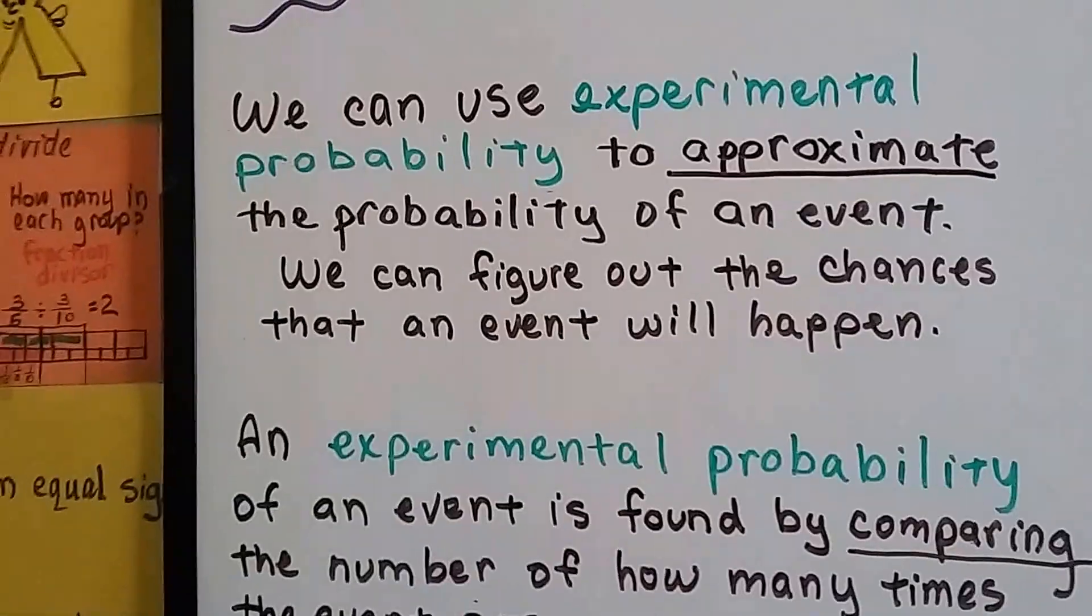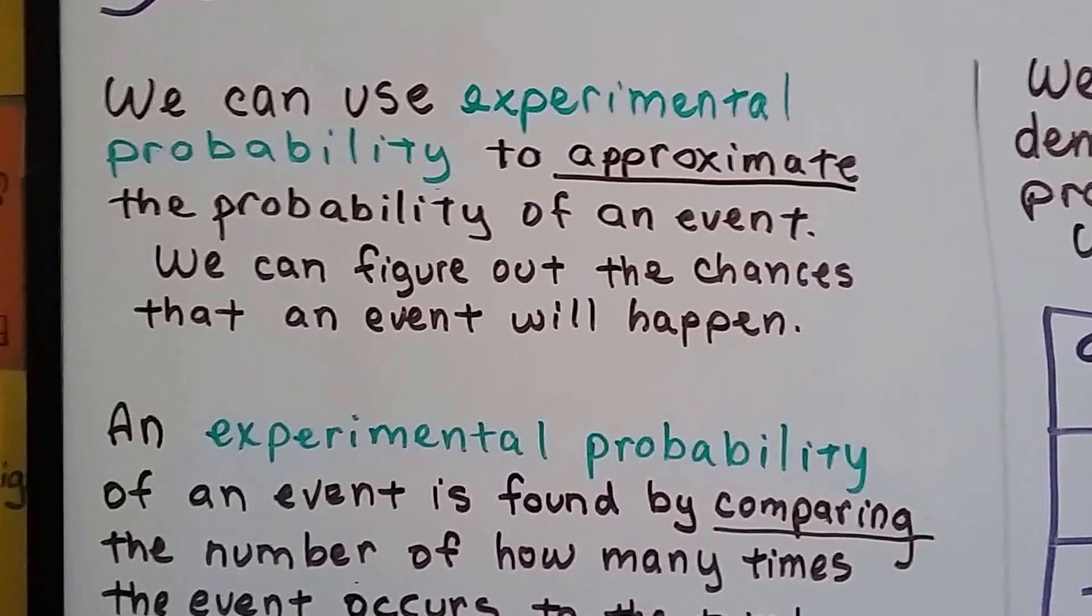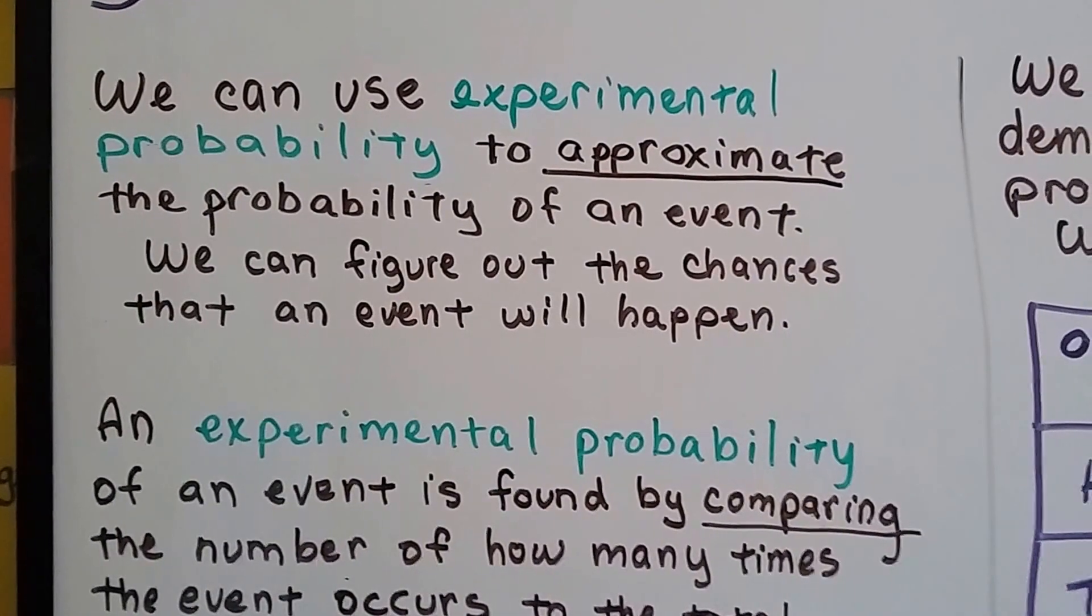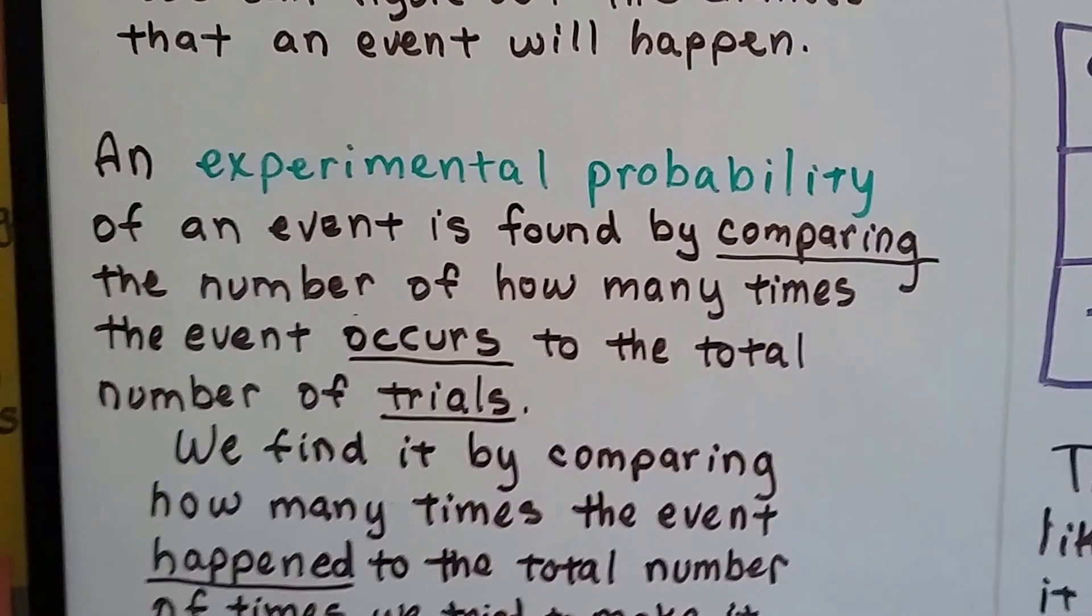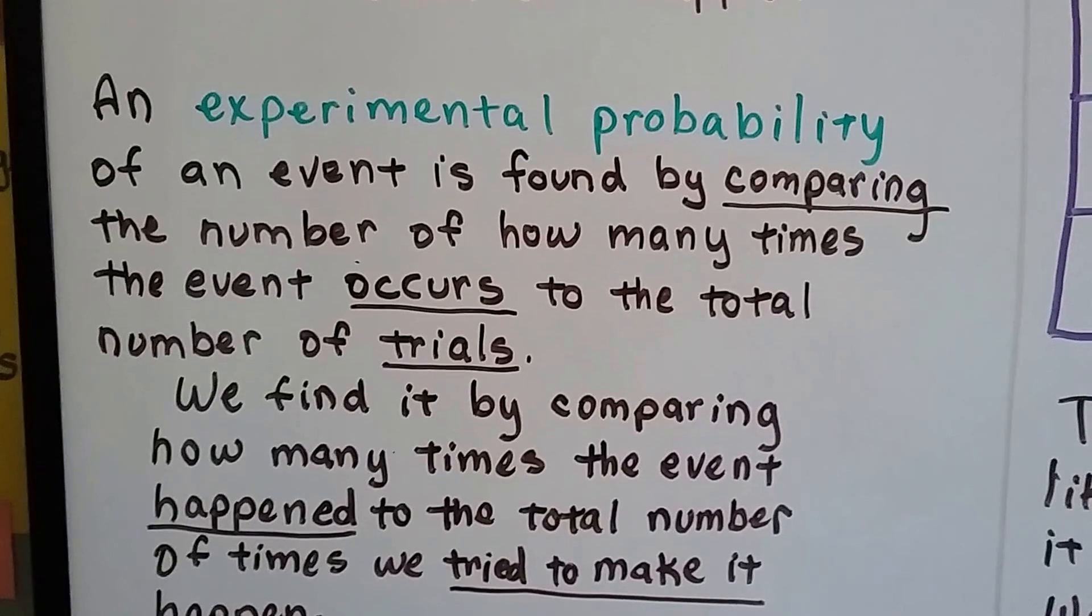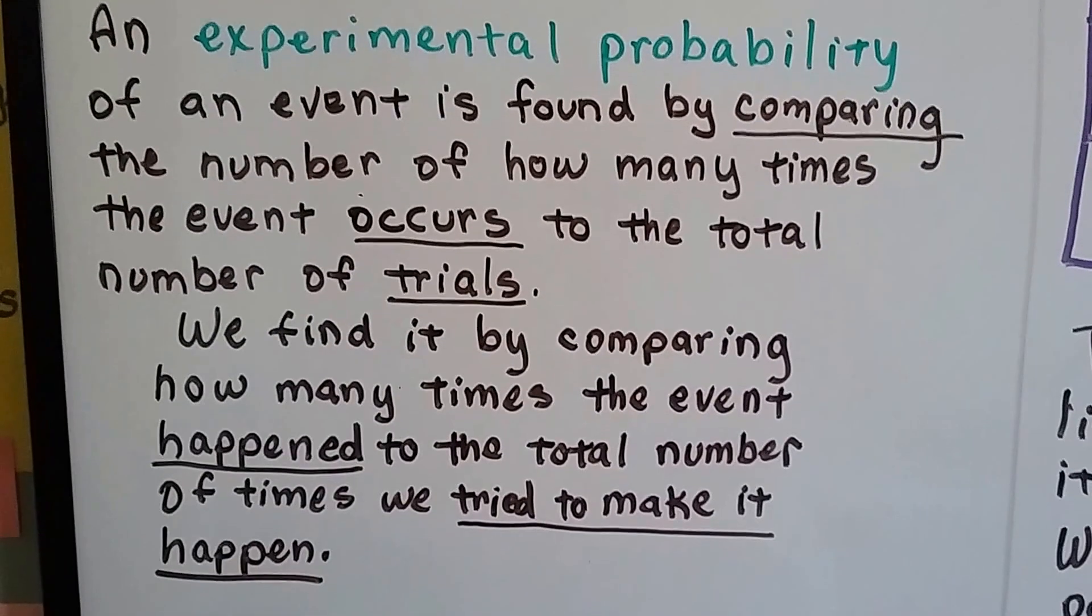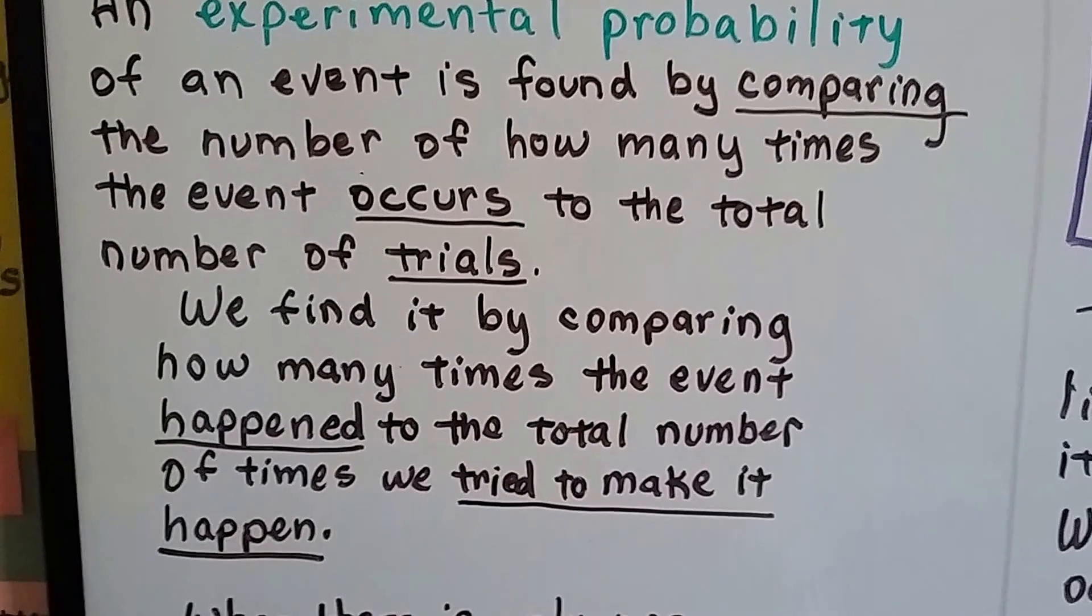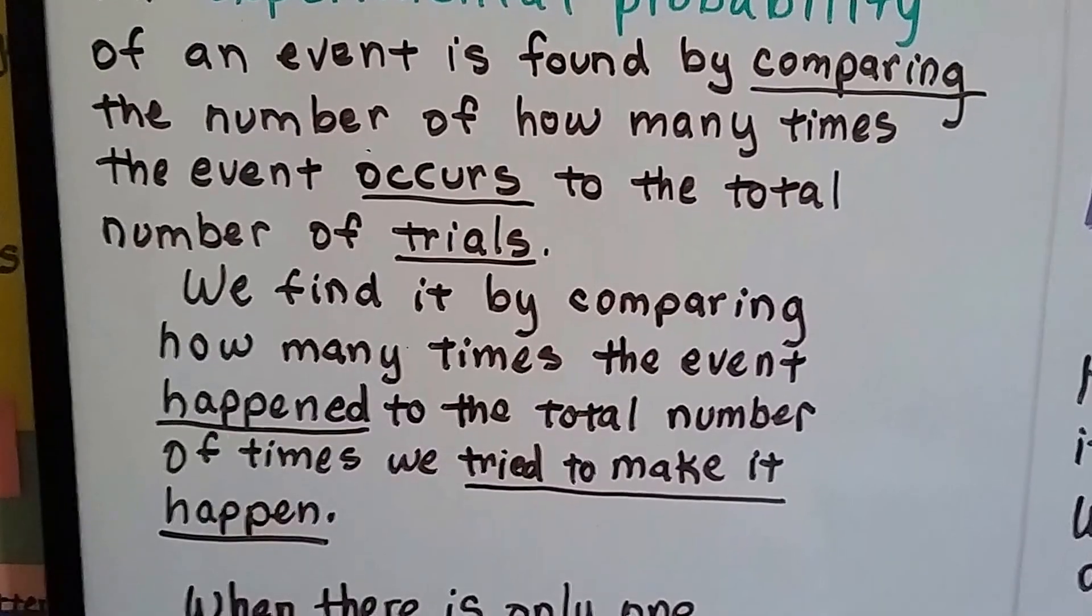So we're going to add experimental probability to this. We can use experimental probability to approximate the probability of an event. An experimental probability of an event is found by comparing the number of how many times the event occurs to the total number of trials. So we find it by comparing how many times the event happened to the total number of times we tried to make it happen.